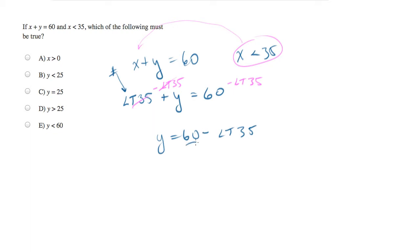So if you take 60 and you subtract less than 35 from it, what you will be left with is greater than 25.